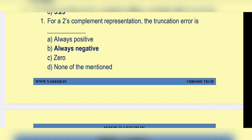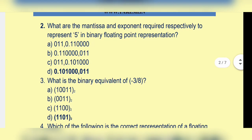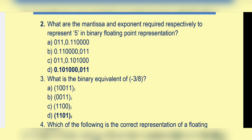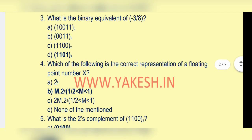Next question: for a two's complement representation, the truncation error is — option b: always negative. Next question: what are the mantissa and exponent required respectively to represent phi in binary floating point representation? Option d: 0.10100, 011.